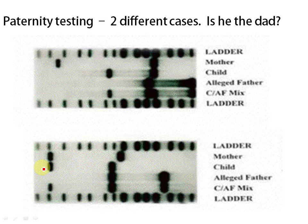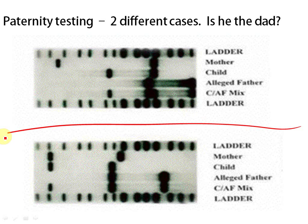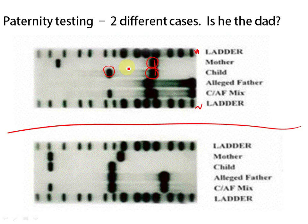Here's another great example — paternity testing, two different cases. Is this guy the dad? We have the child here, a standard, the mother, and the child. The child has these lengths here. The mum has this length here, so possibly it's causing this match. The father here also has this bit here, but we have nothing that accounts for this part of the child's profile. I would suggest that no, this guy is not the dad.